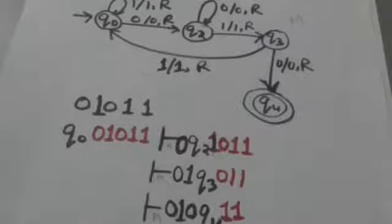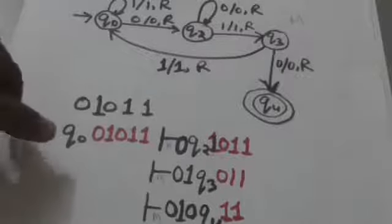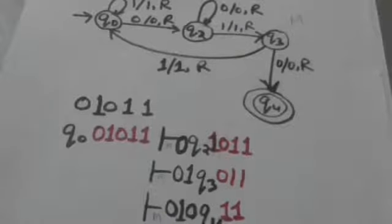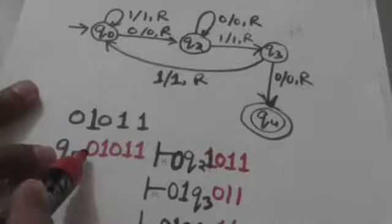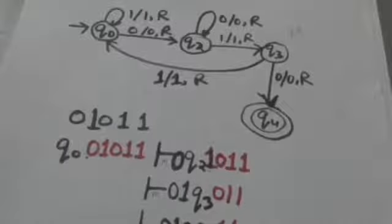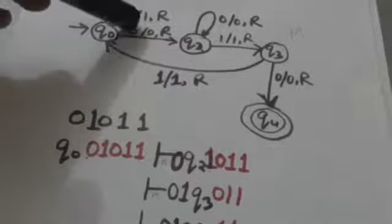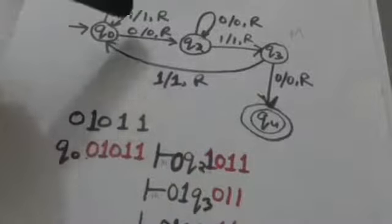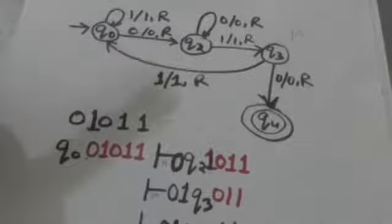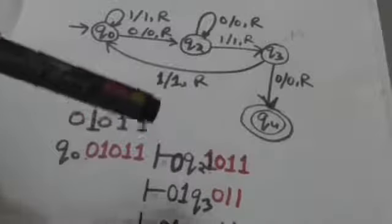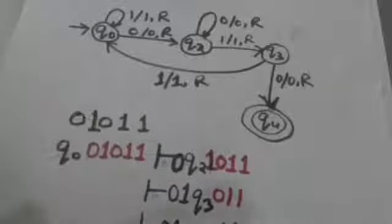Whenever a Turing machine starts reading a string, it always starts from its initial state. So first of all, Turing machine M will be in its initial configuration with state Q0. It will read the input symbol 0. When the Turing machine is in state Q0 and it reads the symbol 0, it jumps to state Q2, replaces this symbol 0 by tape symbol 0, and moves its head one position to the right.